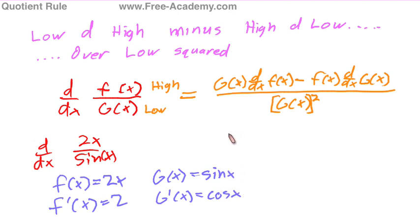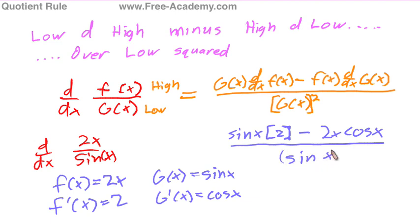And the derivative of that is cosine of x. Now we just plug this into our formula: g of x, sine of x, derivative of f of x is 2. Now, minus f of x, which is 2x. And the derivative of g of x, which is cosine of x.